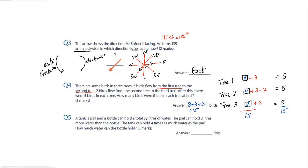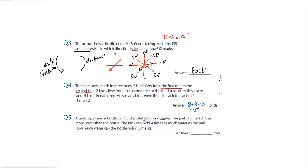Question five: a tank, a pail, and a bottle can hold a total of 52 liters of water. The pail can hold 8 liters more than the bottle. The tank can hold four times as much water as the pail. How much water can the bottle hold?